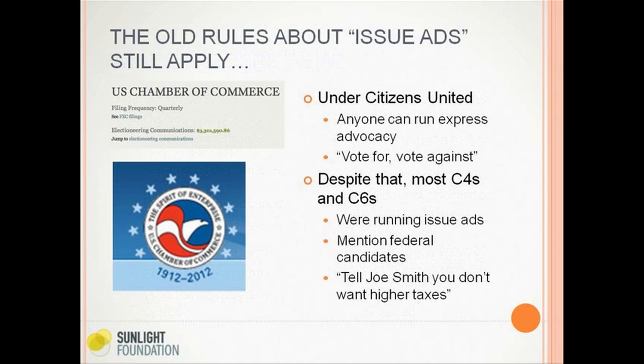We're still operating with the old rules about issue ads in this election, meaning there are two different kinds of activity disclosed by outside groups: independent expenditures and electioneering communications, with very different disclosure rules. Under Citizens United, anyone can run express advocacy — vote for or vote against. Until recently, most C4s and C6 groups — C6 being a business league like the U.S. Chamber of Commerce — were mostly running issue ads that mentioned federal candidates, with taglines like 'tell Joe Smith you don't want higher taxes.'